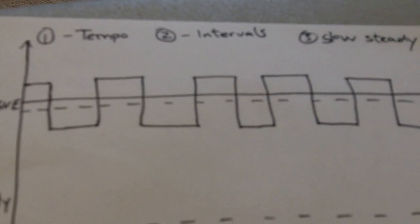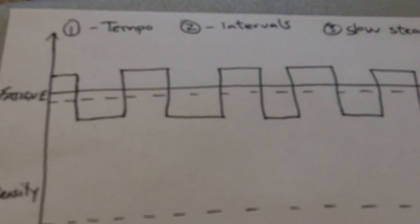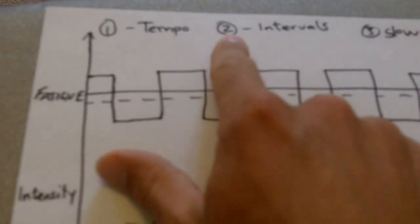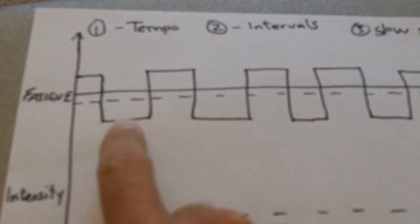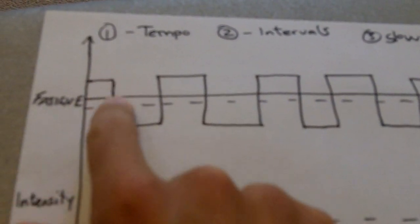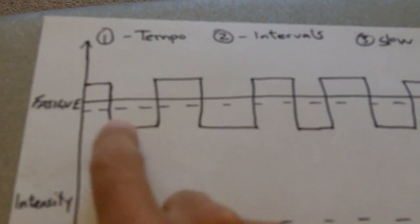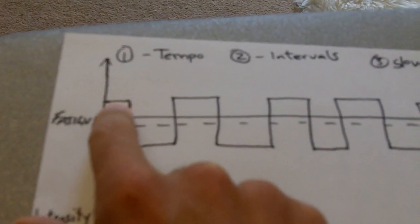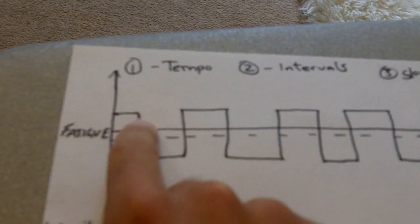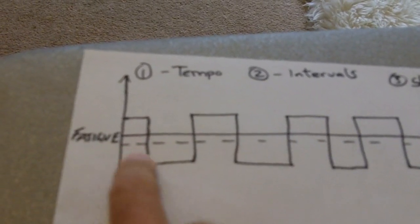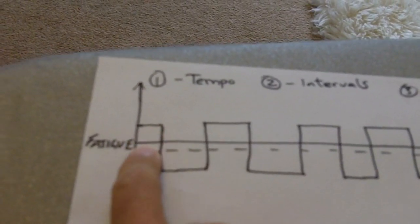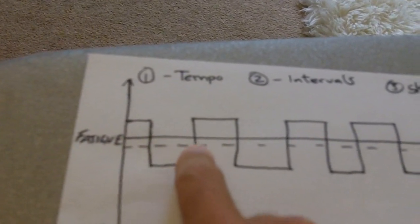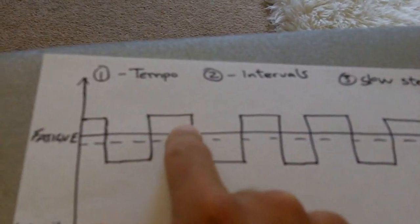What we do at the Kelly Striders is we do three types of session. We do what's called, number two there, an interval session. So that's this solid line that's going up and down here. So what we're doing, we're going to have periods of effort where we're going above our fatigue line and then we're going to have periods of recovery. So we earn the recovery by pushing ourselves above this line of fatigue, take the recovery and then push ourselves up above the line of fatigue again.